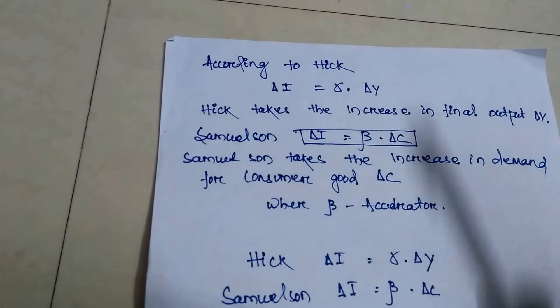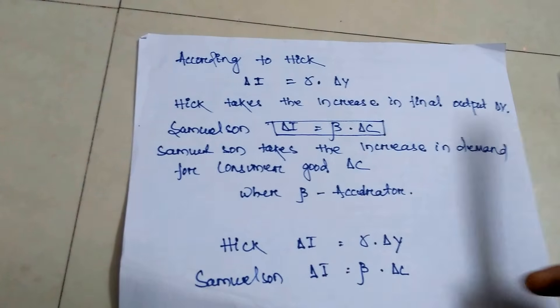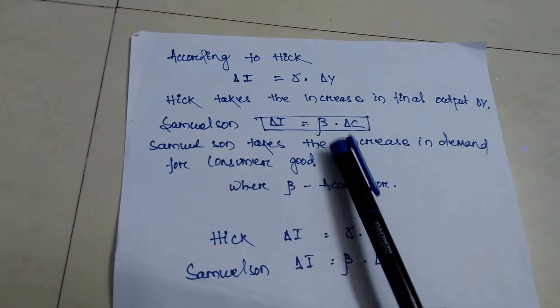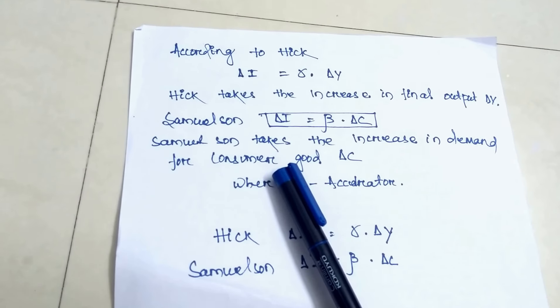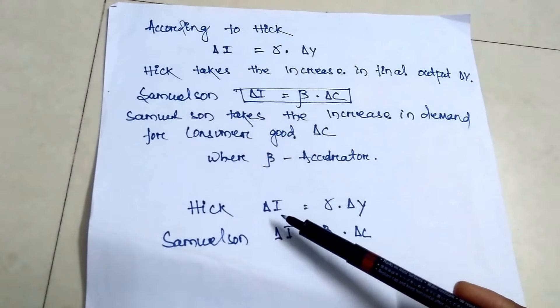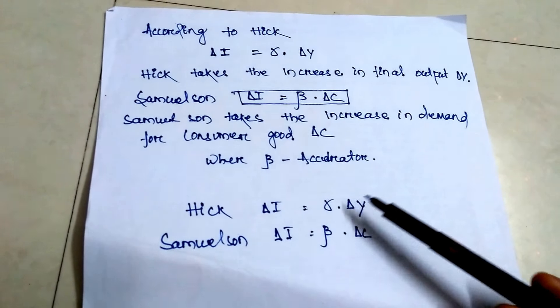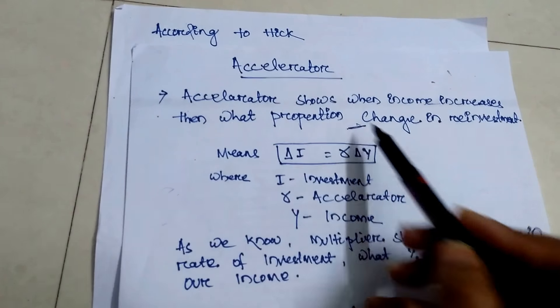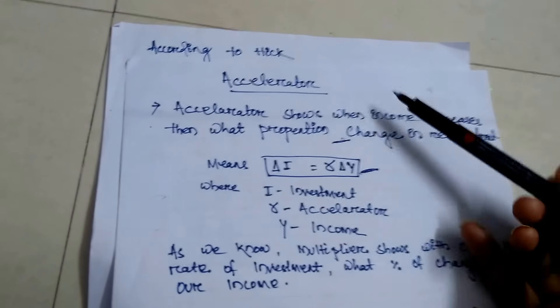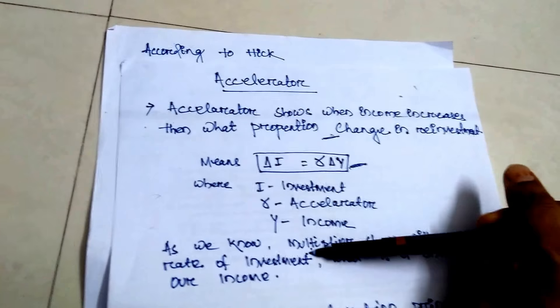According to Hicks: change in I equals R into change in Y. Hicks takes the increase in output, that is, change in Y. Samuelson told that change in I equals beta into change in C. Samuelson takes the increase in demand for consumer goods, that is, change in C, where beta is the accelerator. You have to remember both formulas. In exams you must be able to compare what is the multiplier and what is the accelerator.